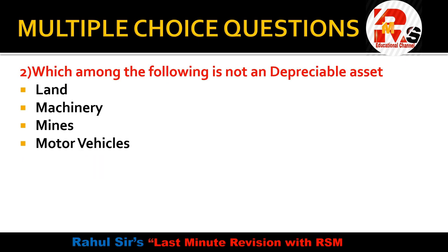The second question: which among the following is not a depreciable asset? Options are land, machinery, mines, and motor vehicles. Machinery, mines, and motor vehicles — depreciation is charged on all of these. But there is one asset on which depreciation is not charged, and that is land. Because land always appreciates; it does not depreciate. So the right answer for question number two is land.